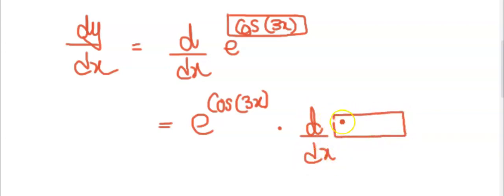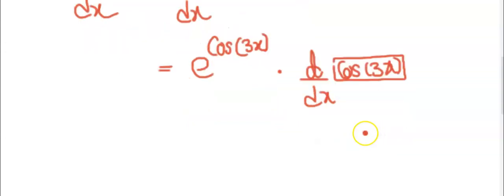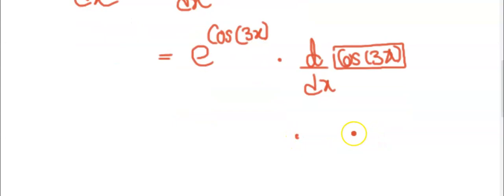What was in the box? Cos 3x. You know what's the differential of cos 3x? Differential of cos 3x is minus sine 3x. And then you differentiate this 3x, which is 3.